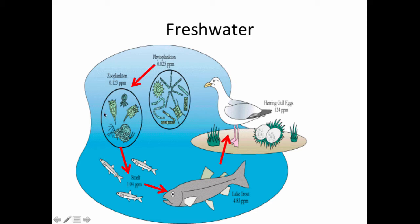Producers are consumed by zooplankton. If you look at the prefix 'zoo,' like zoology or a zoo, that means animal. So these are animal-like protists that eat the photosynthetic plankton. Then you have smelt, which are tiny little fish like those little ones you see in the lake. A trout eats a smelt, and then a herring can eat the trout. So you have your producer, primary consumer, secondary consumer, tertiary consumer, and fourth level or top consumer.